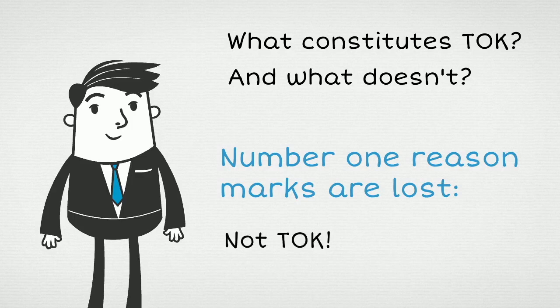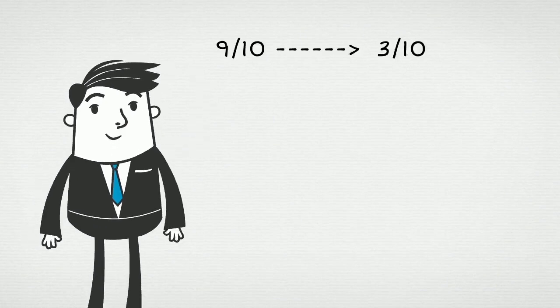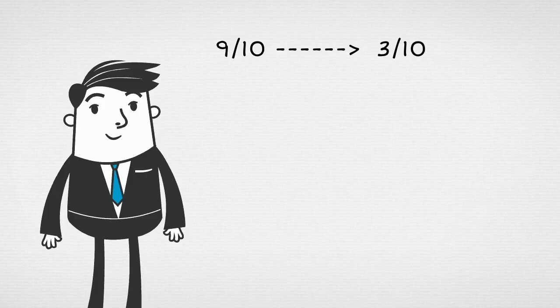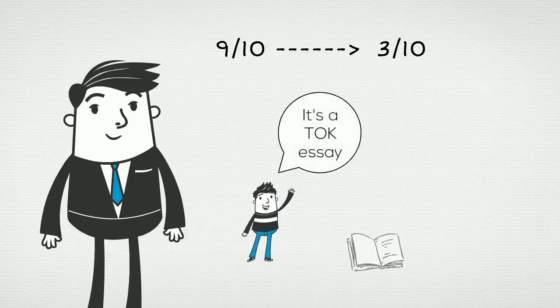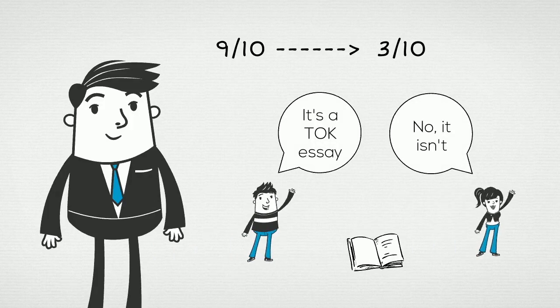That's also the major reason why teachers sometimes mark your essay at an 8 or 9 out of 10, and the mark that comes back from IB examiners is like a 2 or 3 out of 10. Teachers feel extremely surprised and frustrated with this, but most frequently that is the reason. They think they're looking at a TOK essay, but it isn't.